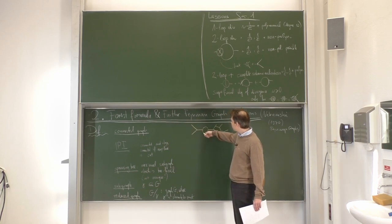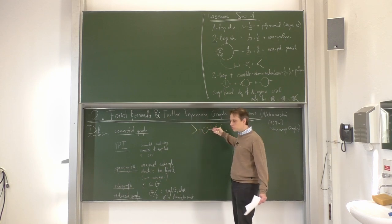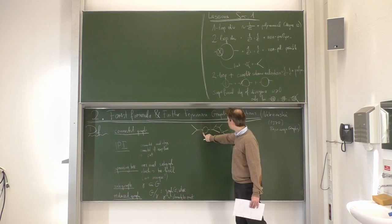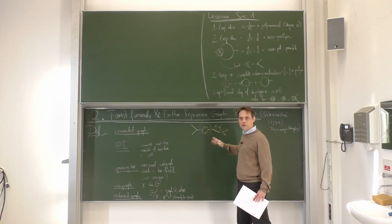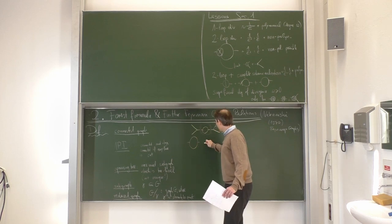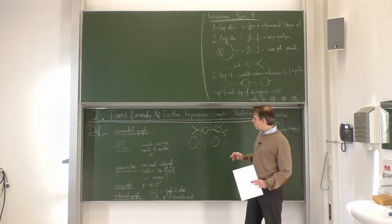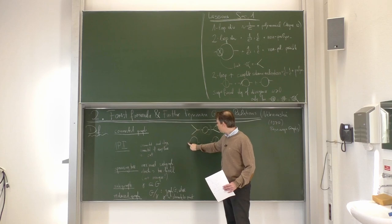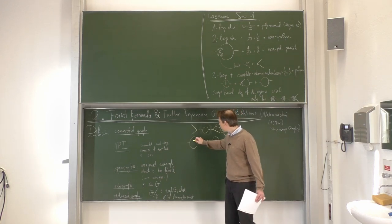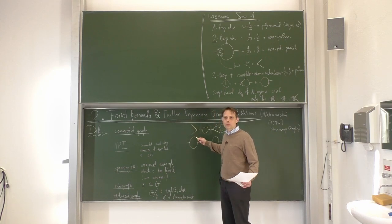This is not one-particle irreducible because if we cut this line it does not stay connected. So this is a graph which is reducible, and the irreducible parts of it are, for example, this loop here or that loop over there. A typical one-particle irreducible diagram would be something like this, or at the two-loop level something like that. In our definition of 1PI, the external lines do not belong to the one-particle irreducible graph.